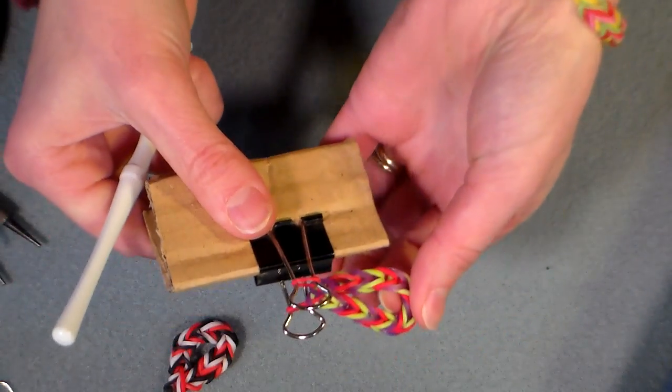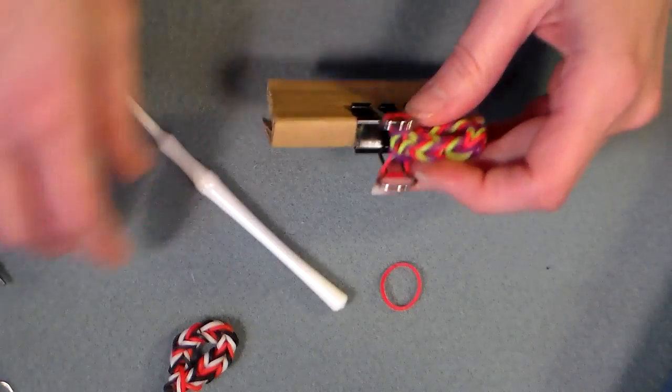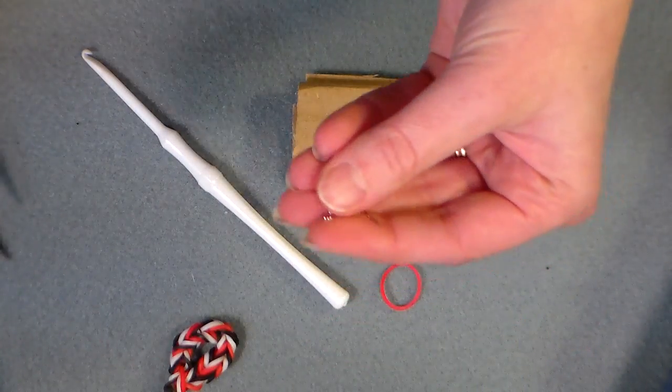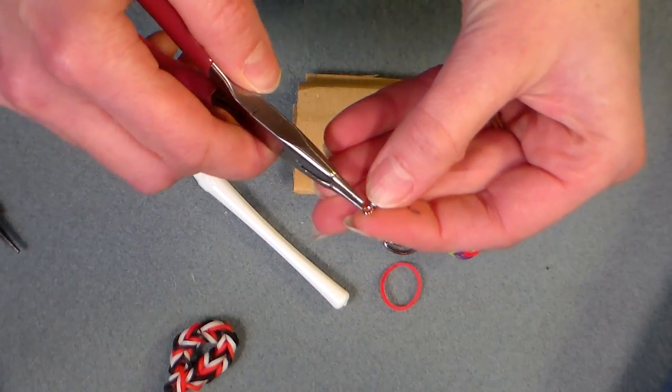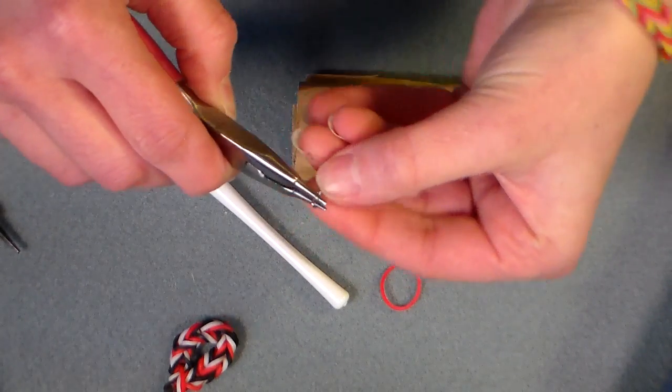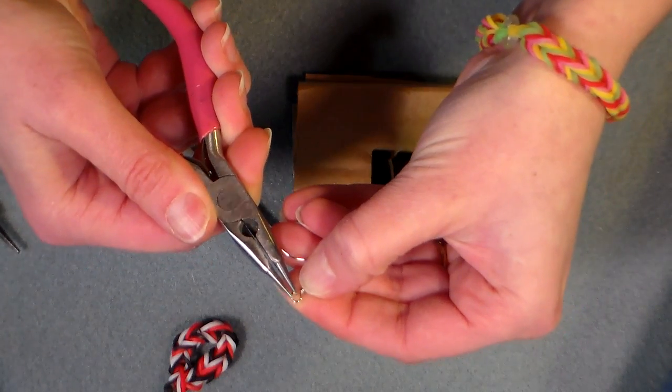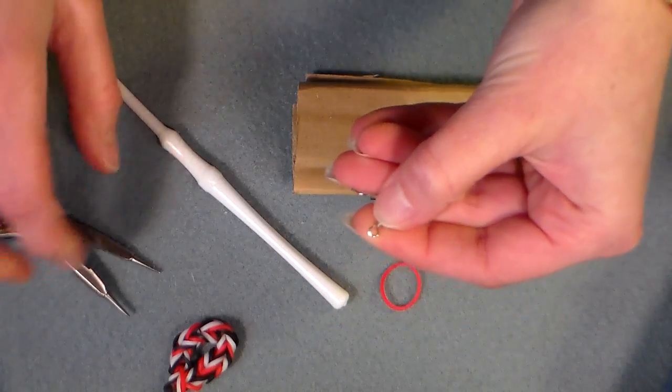And then what I'm going to do is I'm going to open up an earring finding, here I have just a little ear wire. And you don't need to use a C clip here because it's going to be fine in here, and it's not going to slip through because the bands are so thick. Just open up your earring wire by twisting.